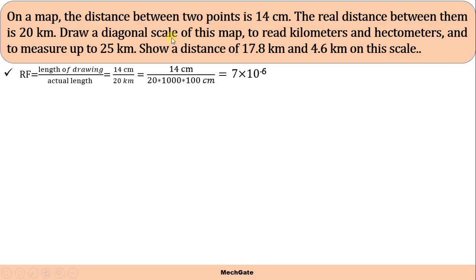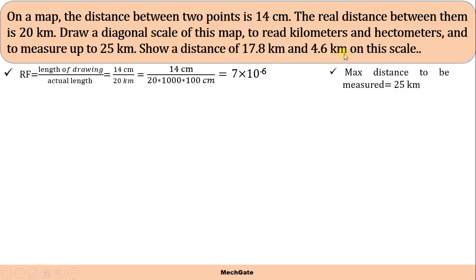Draw a diagonal scale of this map to read kilometers and hectometers and to measure up to 25 kilometers. We have to show only two units — kilometer and hectometer — using this diagonal scale. The maximum distance to be measured is 25 kilometers. We also have to show distances of 17.8 kilometers and 4.6 kilometers on this scale.